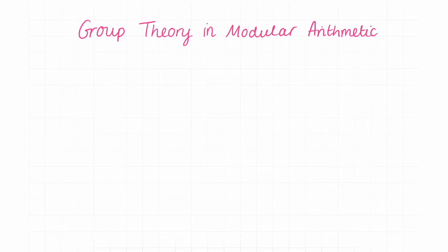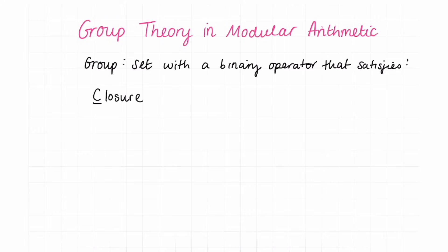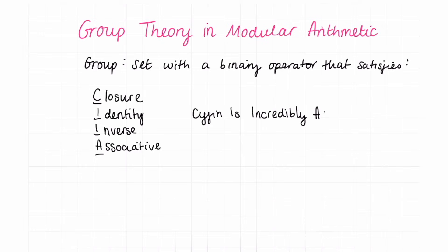Group theory in modular arithmetic. In the previous video, we covered group theory, so if you haven't seen that video, I encourage you to watch that. This video is the fourth part of a series, so I also recommend you watch those videos before this one, because they are prerequisites. We considered all properties of group theory with the infinite set of integers, but what about for a finite set? What about when we are considering a set of integers modulo some other integer?